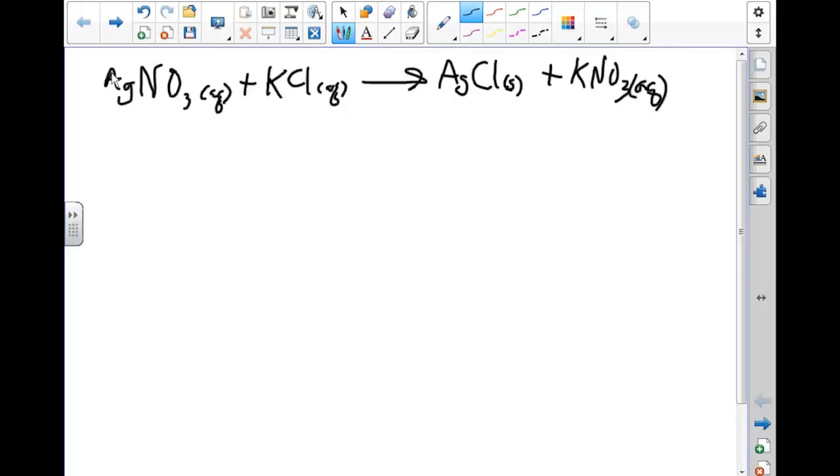When we're looking at our chemical equation, the first thing we want to do is separate everything into ions that's aqueous. If we look at the first one, we have our Ag⁺, which is aqueous, plus our NO₃⁻, which is also aqueous, plus our potassium K⁺, also aqueous, and our chlorine ion Cl⁻ with a negative charge.